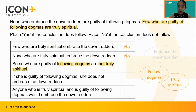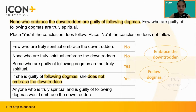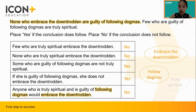The third conclusion does follow from the information. The statement that few who follow dogmas are truly spiritual implies there are others who follow dogmas and are not truly spiritual. The fourth conclusion follows directly from the fact that there is no overlap between 'follow dogmas' and 'embrace the downtrodden'. For the fifth conclusion, since a person who follows dogmas cannot embrace the downtrodden, we can put 'no' without even needing to consider the path about being truly spiritual.